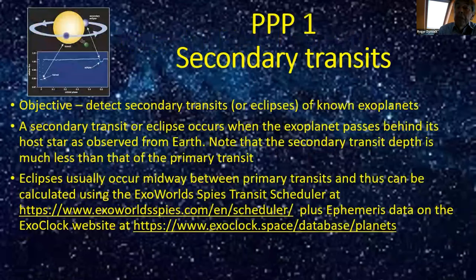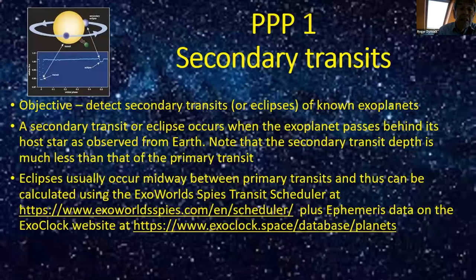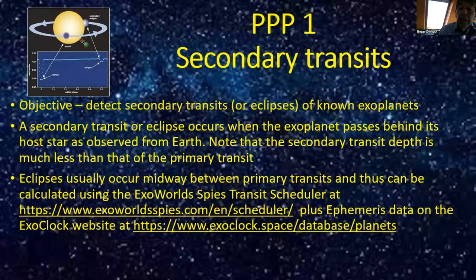The objective of the first pilot is to detect secondary transits — also known as eclipses — of known exoplanets. That occurs when the planet passes behind the star. As these usually occur midway between primary transits, their timing could be calculated using, for example, the Exoplanet Spires Transit Scheduler. Mind you, they are much fainter than the main transit, so it's probably a good idea to pick transits with quite a large depth.